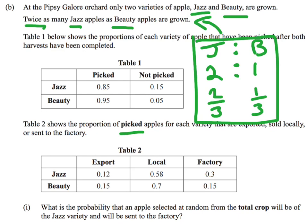We're asked for the probability that an apple chosen at random from the total crop - that's going to be important - will be a jazz apple and has gone to the factory. That's what we want to know. We want to know the probability of a jazz apple going to the factory. That's what we're trying to find.